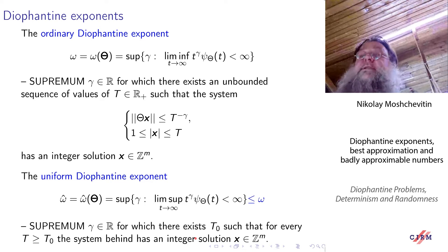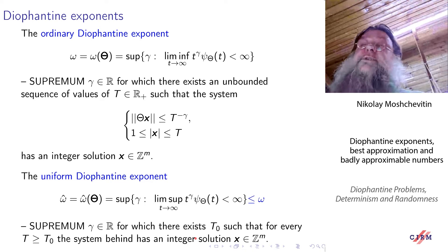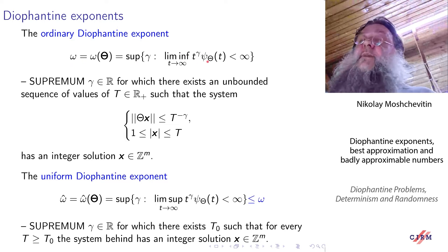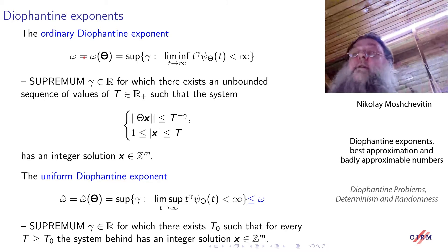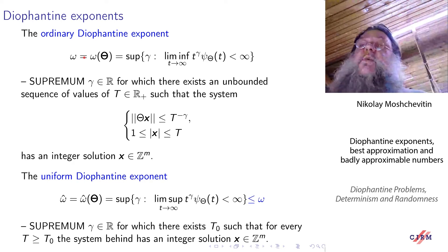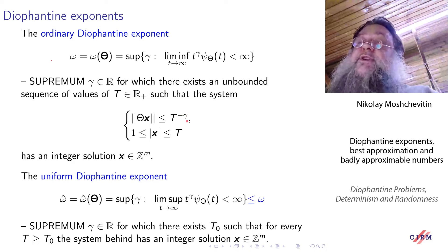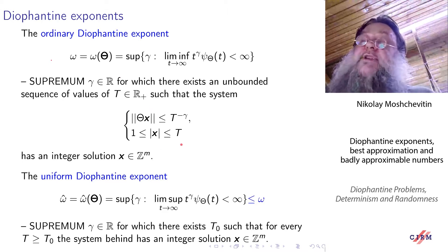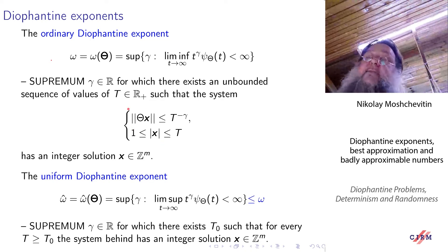So omega and omega-hat are Diophantine exponents. Omega is the ordinary Diophantine exponent, defined by this formula. To make this formula more clear, I give an alternative definition. Omega is the supremum of such gammas for which, for infinitely many t's — for an increasing sequence of t's — such an inequality has infinitely many solutions.